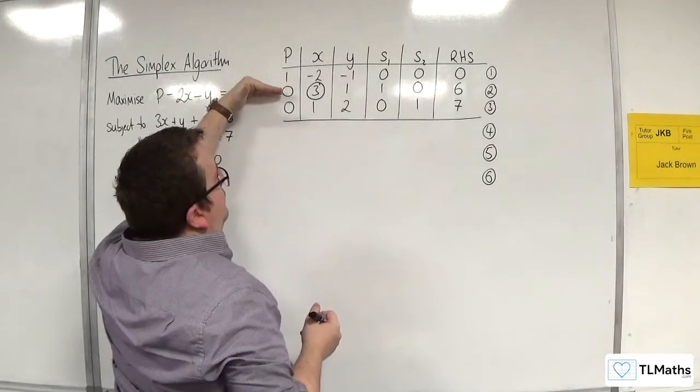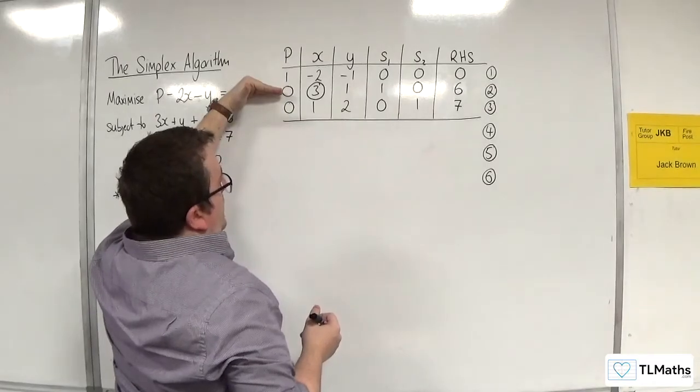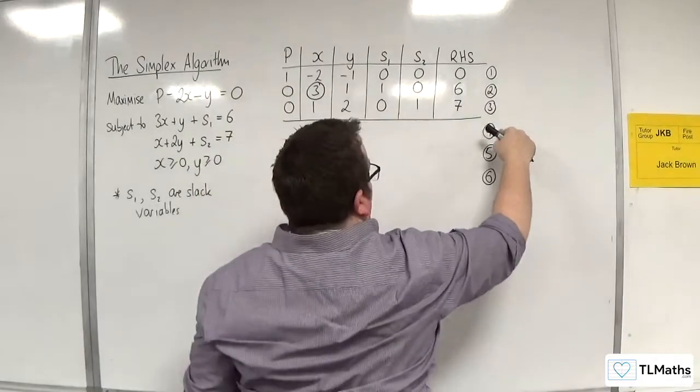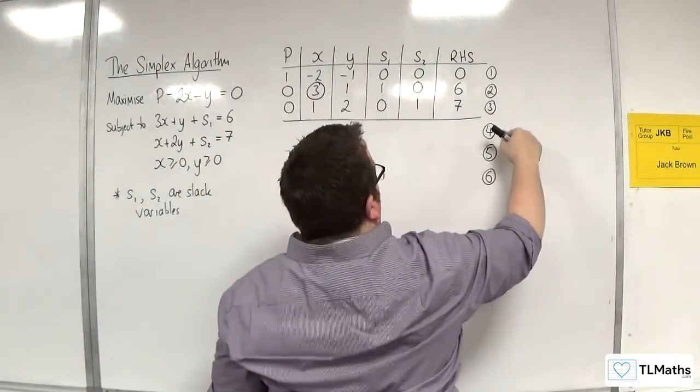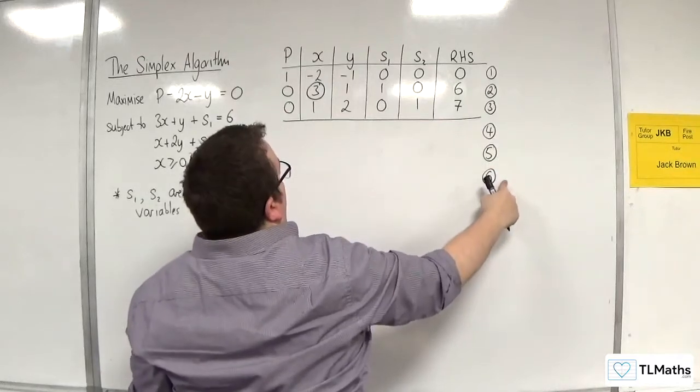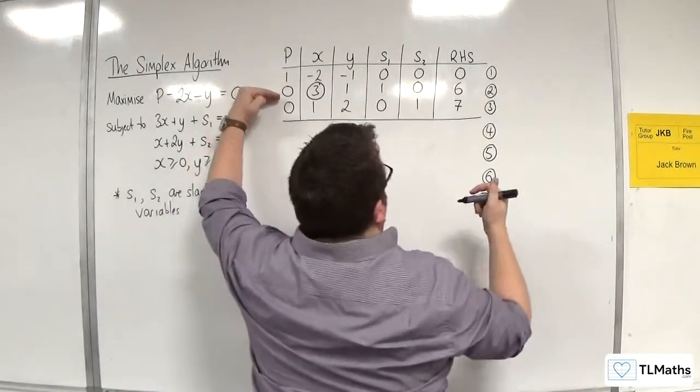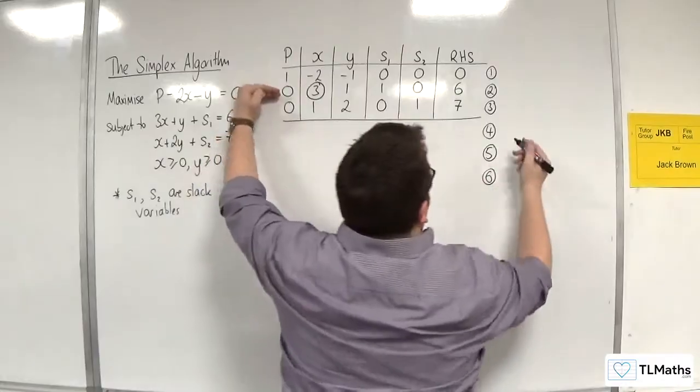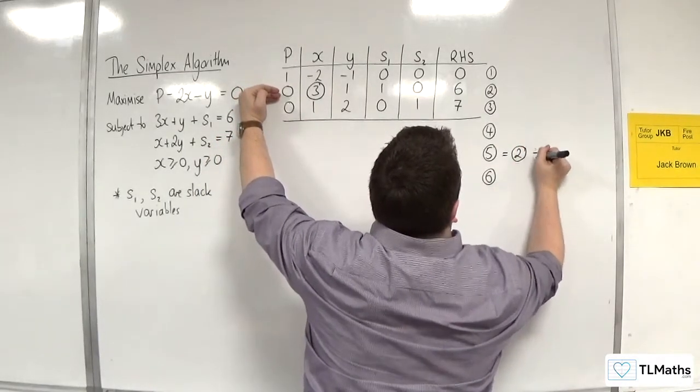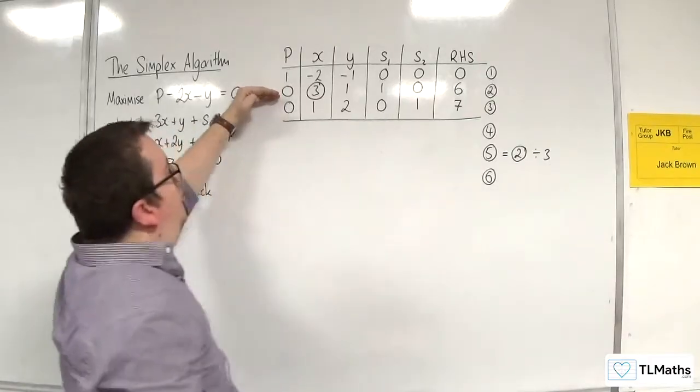So you go for equation 2 first, so line 2, and you divide that through by 3. So 1, 2, 3 relates 1, 2, 3. So equation 1 will become equation 4, 2 will become 5, 3 will become 6. So equation 2 will become 5 by me dividing through by 3. So equation 2 divided by 3.